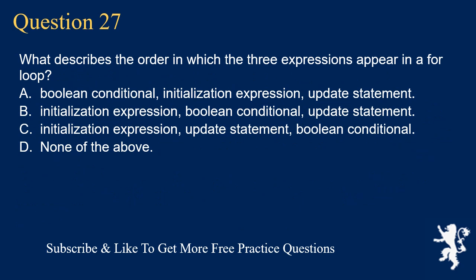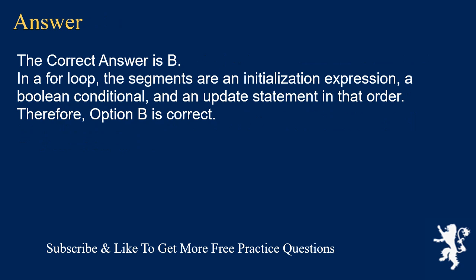Question 27. What describes the order in which the three expressions appear in a for loop? A. Boolean conditional, initialization expression, update statement. B. Initialization expression, boolean conditional, update statement. C. Initialization expression, update statement, boolean conditional. D. None of the above. The correct answer is B. In a for loop, the segments are an initialization expression, a boolean conditional, and an update statement in that order. Therefore, option B is correct.